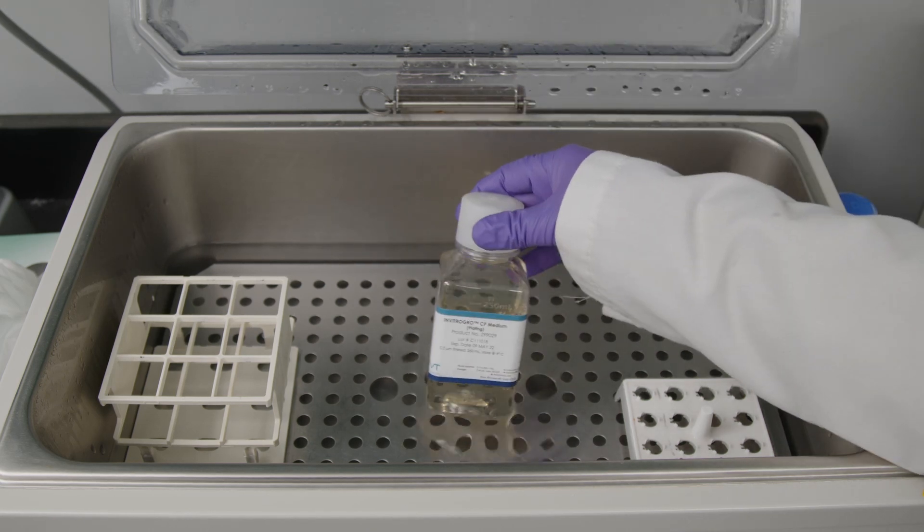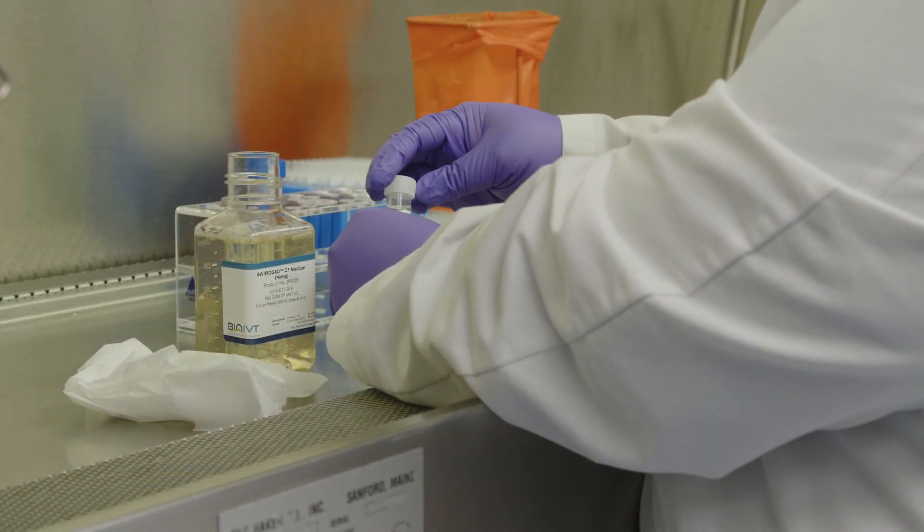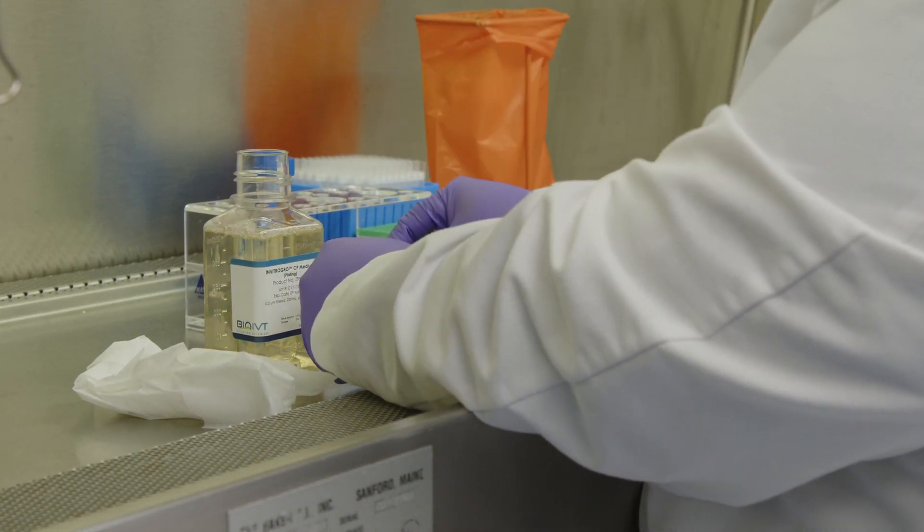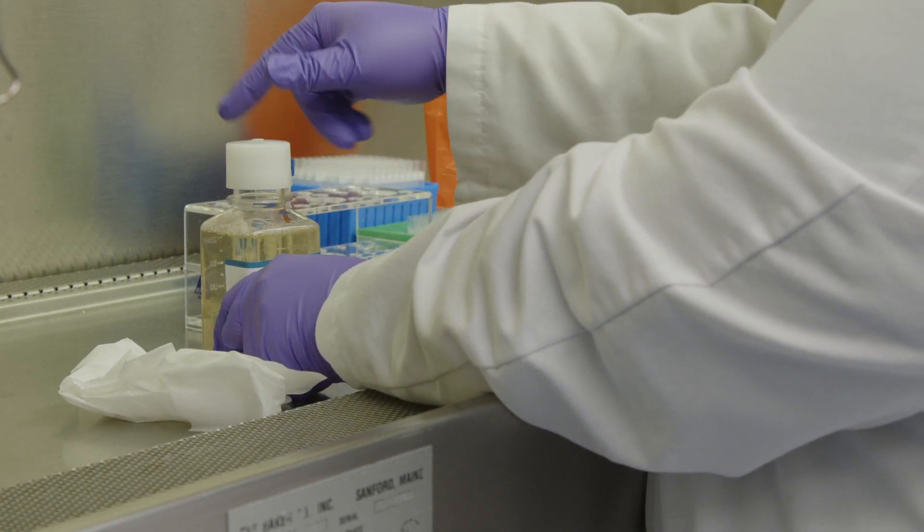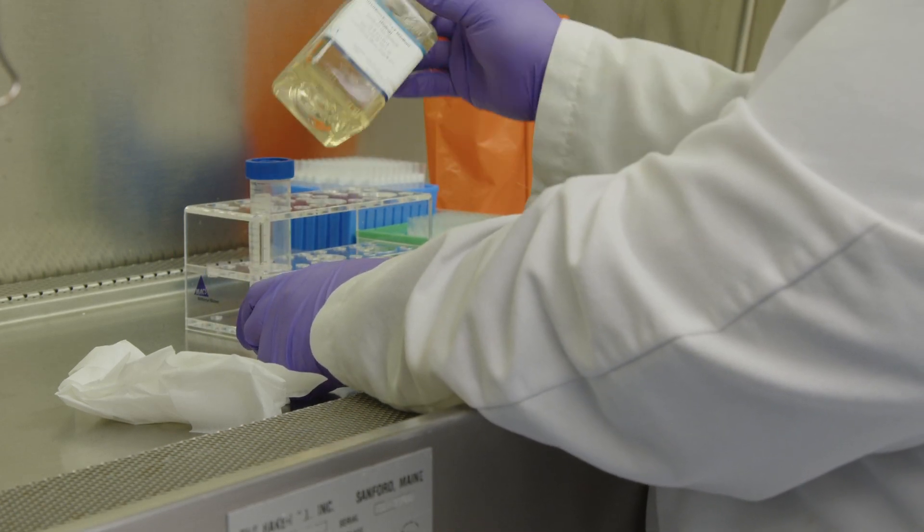Place In Vitro Grow CP Medium into a 37 degrees Celsius water bath for at least 30 minutes. Add the 5.5 milliliter vial of Torpedo Antibiotic Mix to the 250 milliliter bottle of In Vitro Grow CP Medium. The medium has a shelf life of one week when stored at 4 degrees Celsius.